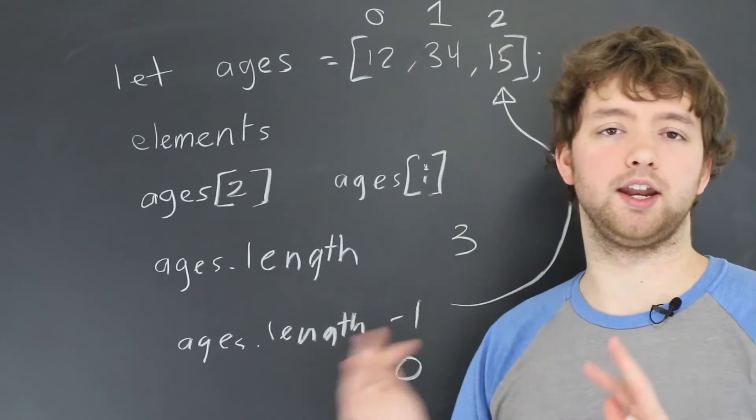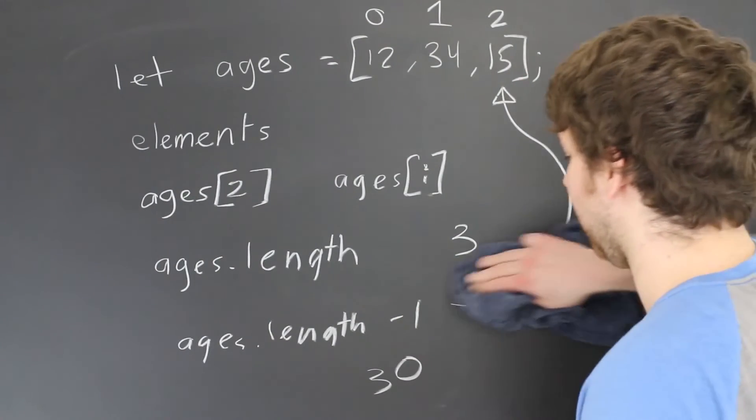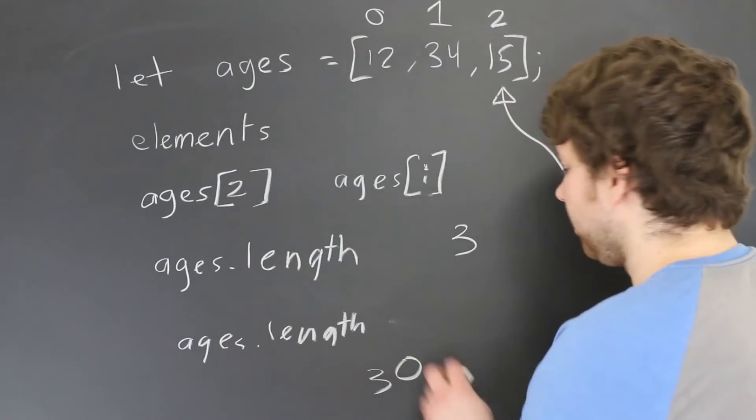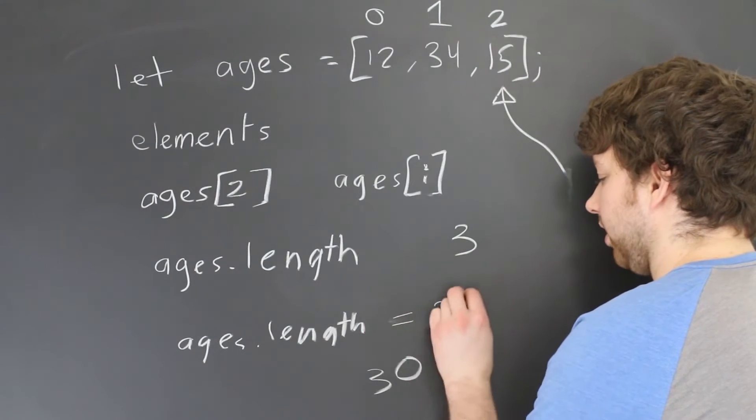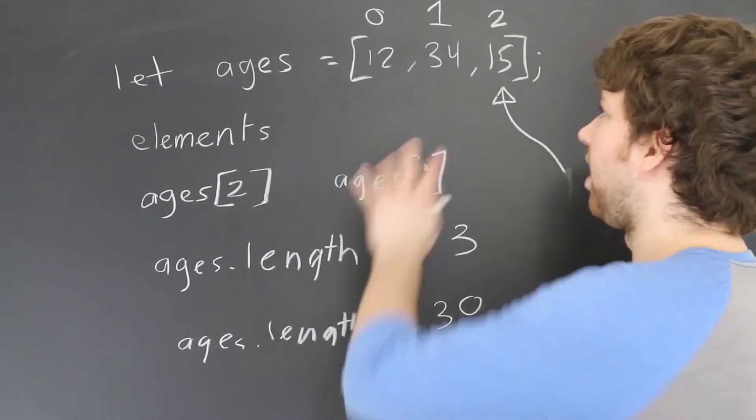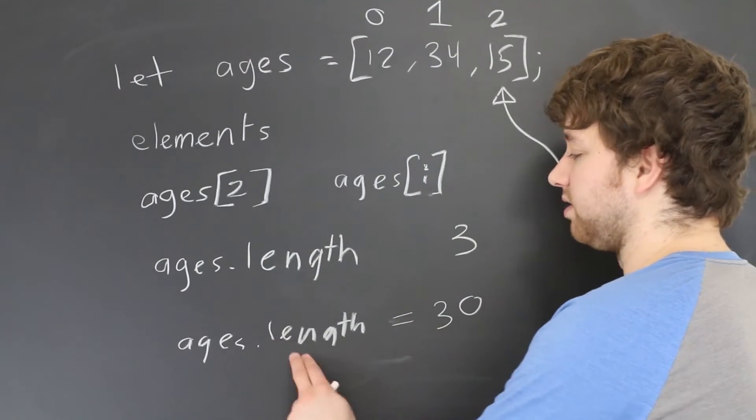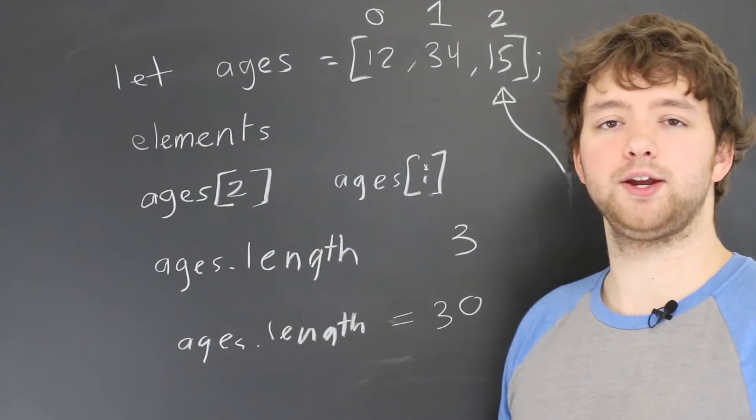For example, here's something we could do: we could take ages.length and assign it the value 30. That didn't actually add any valuable data points in the array—it just changed the value of this property. Other languages might have the same property, but it's probably read-only. In JavaScript you can write to that property.